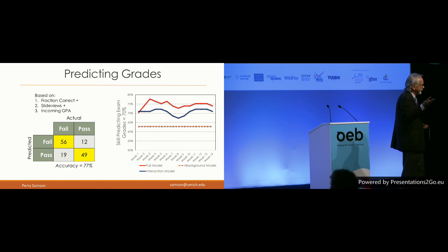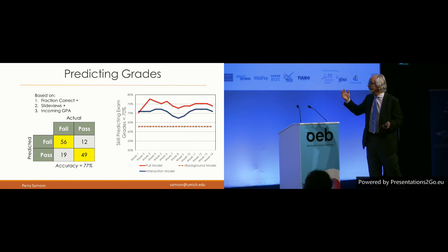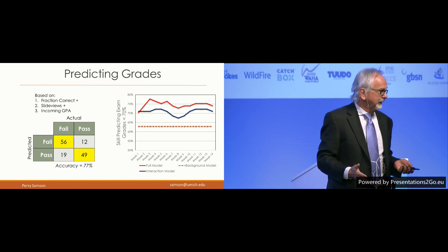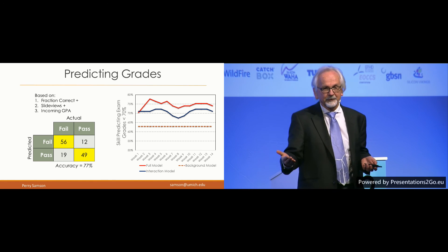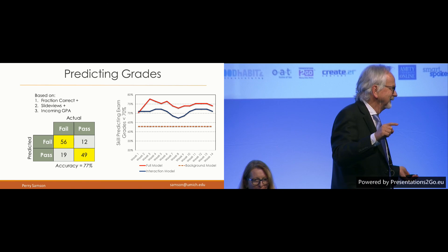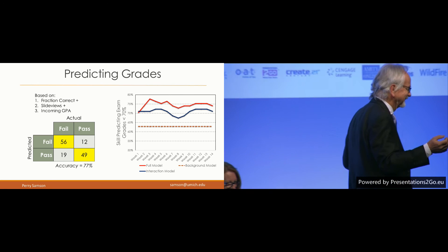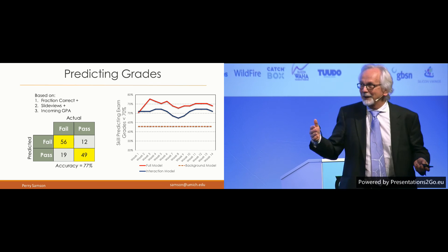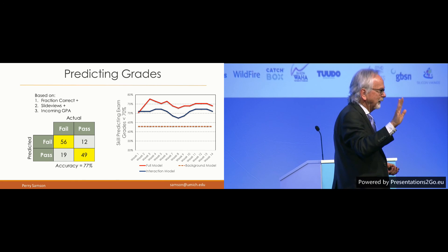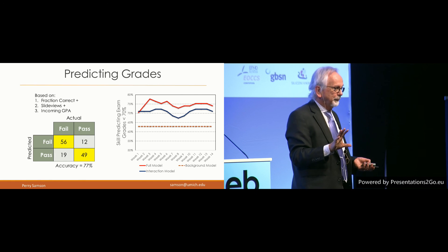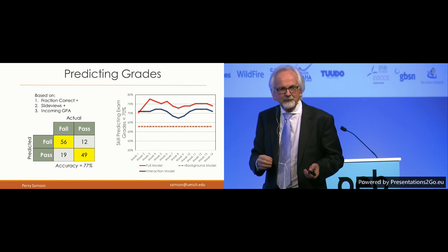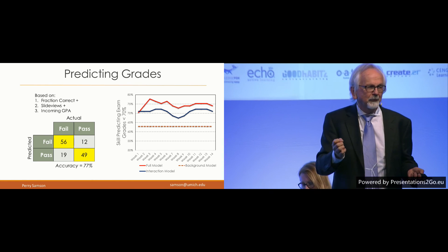I used three parameters: the student's incoming grade point average; how many of the slides I'm presenting are they actually viewing during class, which is a measure of attentiveness; and the fraction of questions they got correct. You might not always know a student's incoming GPA, so if I remove that, accuracy drops to about 70% — but it's still 70%. So with reasonable accuracy, by week two you're able to identify who is going to be in trouble.